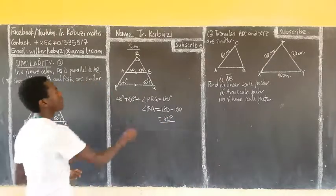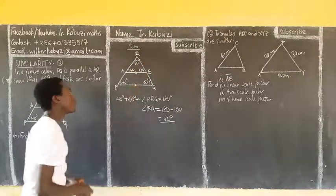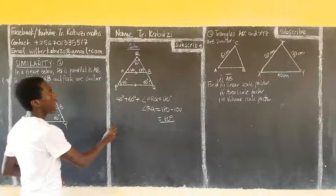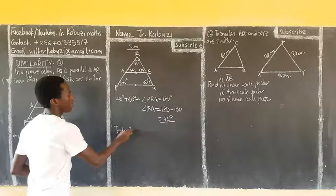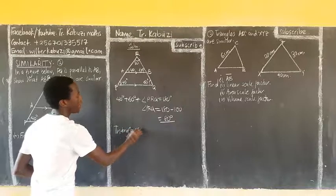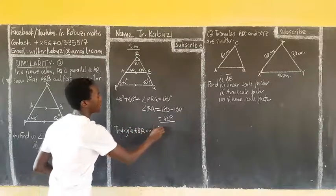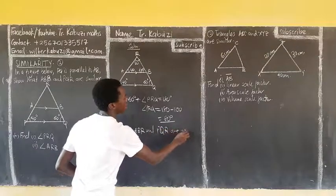So, so that even this one is going to be 80 degrees. And so, if this is 60, this one is going to be 80 degrees. Now, it's that triangle ABR and PQR are similar.